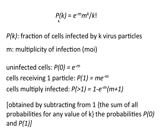The mathematical equation we use to figure out how many virus particles each cell receives is the Poisson distribution, which informs us about low-frequency events like this. The Poisson equation is: P(k) is the fraction of cells infected by k virus particles, calculated as e to the minus m, times m to the k power, over k factorial, where m is the multiplicity of infection.